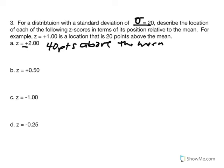The positive value tells us it's above the mean, and the 2 indicates how many standard deviation units from the mean. We have 2 standard deviation units above; each standard deviation is worth 20 points, so we get 40 by taking 2 multiplied by 20. For part B, it's also a positive z-score indicating above the mean, and this score's location is half a standard deviation unit above the mean. Half of 20 is 10 points above the mean.